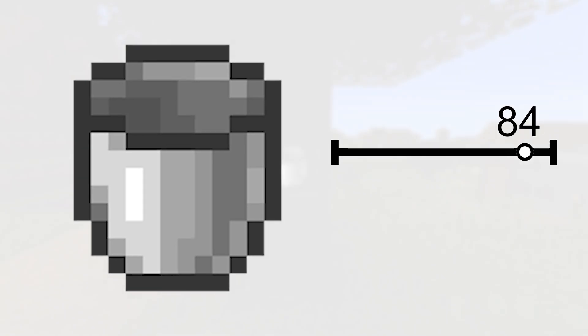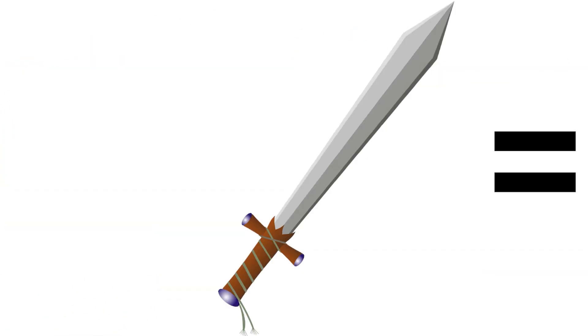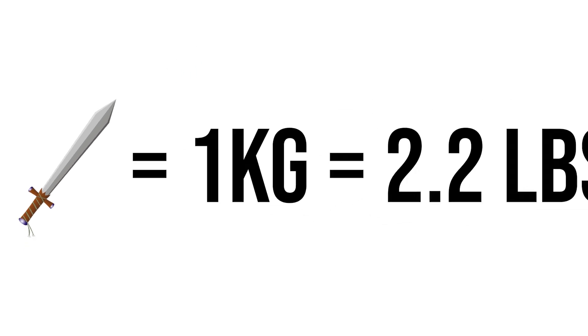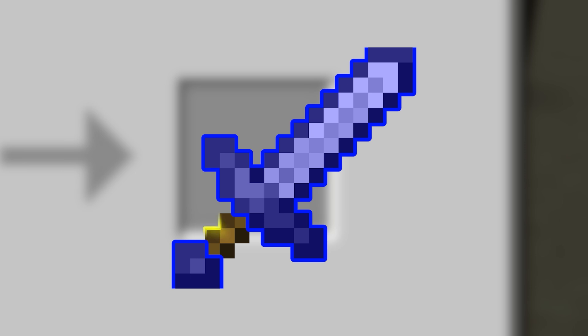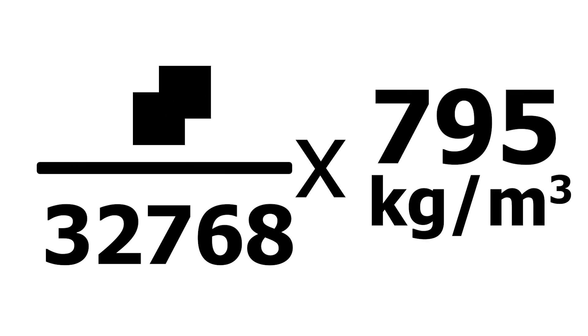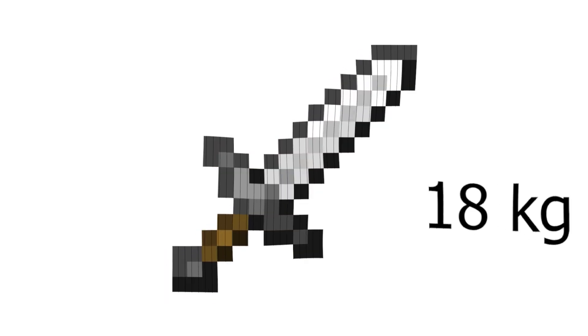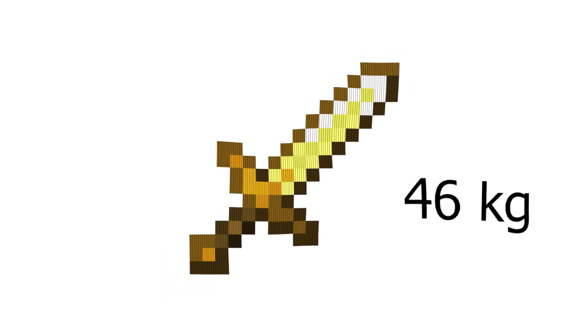For the tools, we'll be using the weird item frame rule as well. For my fellow imperial system users, the average sword is 1 kilogram or 2.2 pounds, so not too bad. The classic sword is about 77 pixels of material and 7 pixels of wood. We divide by 32 cubed to get meters cubed, then multiply by the density of wood to get our stick weight of 170 grams. After using the same method on the material: wood is 2 kilograms, stone is 4, iron is 18, diamond is 8, gold is 46, and netherite is 189.